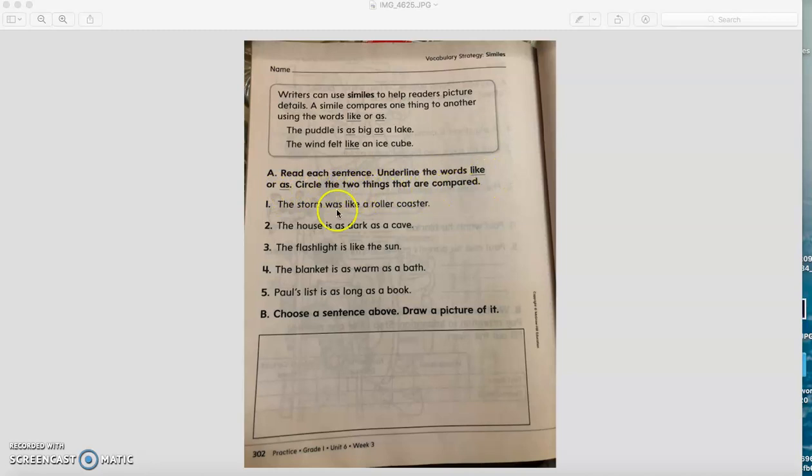So the storm was like a roller coaster. Here, first you will circle the simile word. So here we have the word like. What are they comparing? They're comparing the storm to the roller coaster. So you will circle the storm and roller coaster.